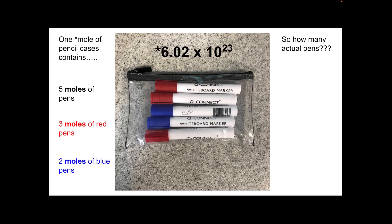So five moles of pens would just be five times Avogadro's number, so we'd have that many pens. We've got three moles of red pens, so that's three times Avogadro's number which is that number. Two moles of blue pens is two times Avogadro's number.